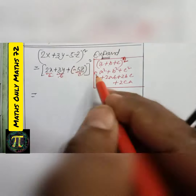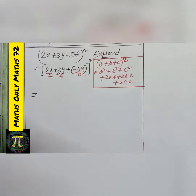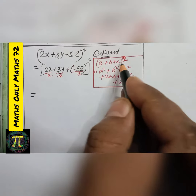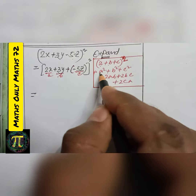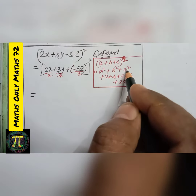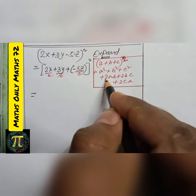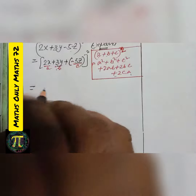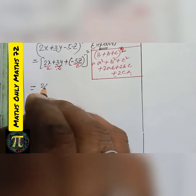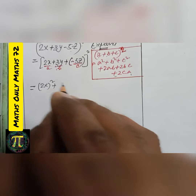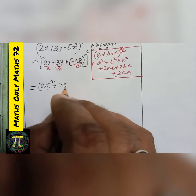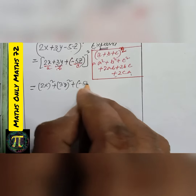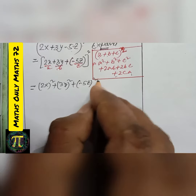Now, (a + b + c) whole square equals a square plus b square plus c square plus 2ab plus 2bc plus 2ca.